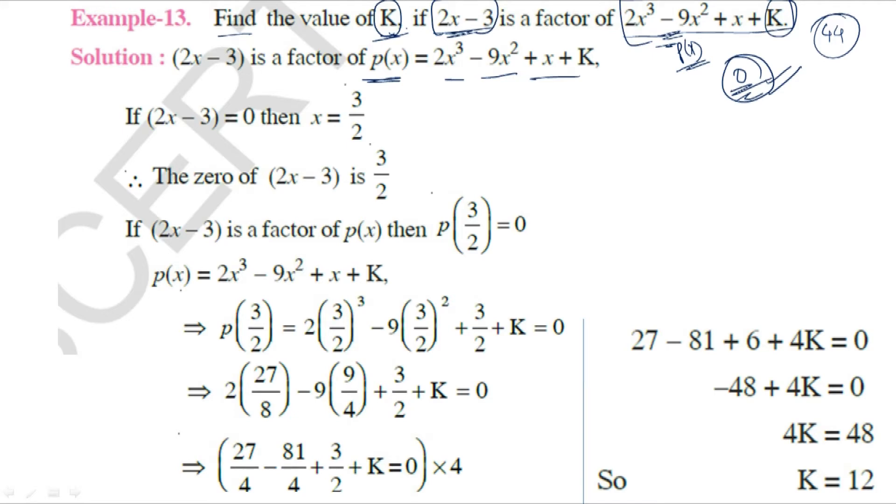If (2x - 3) = 0, then x = 3/2. First, we find the zero of the linear polynomial. 2x - 3 = 0, so 2x = 3, and x = 3/2. The zero of (2x - 3) is 3/2.